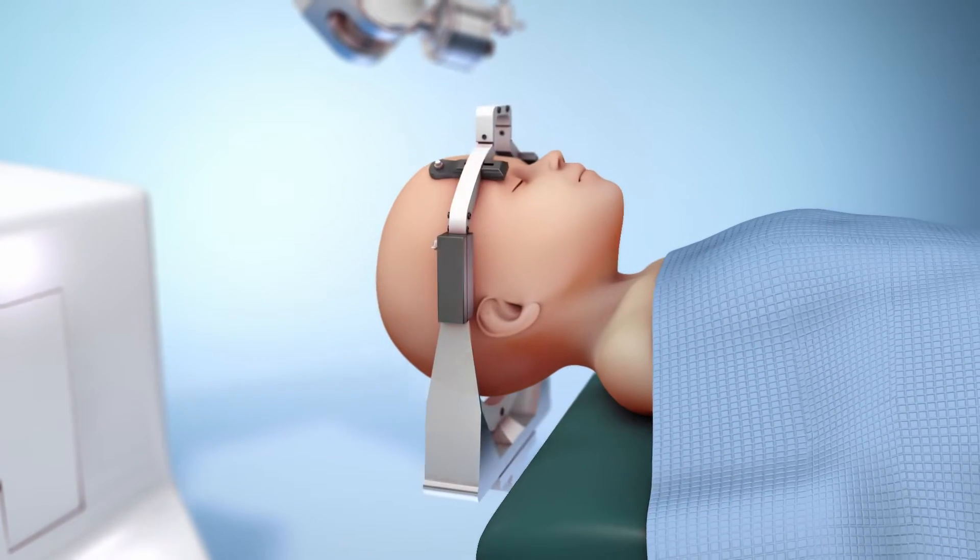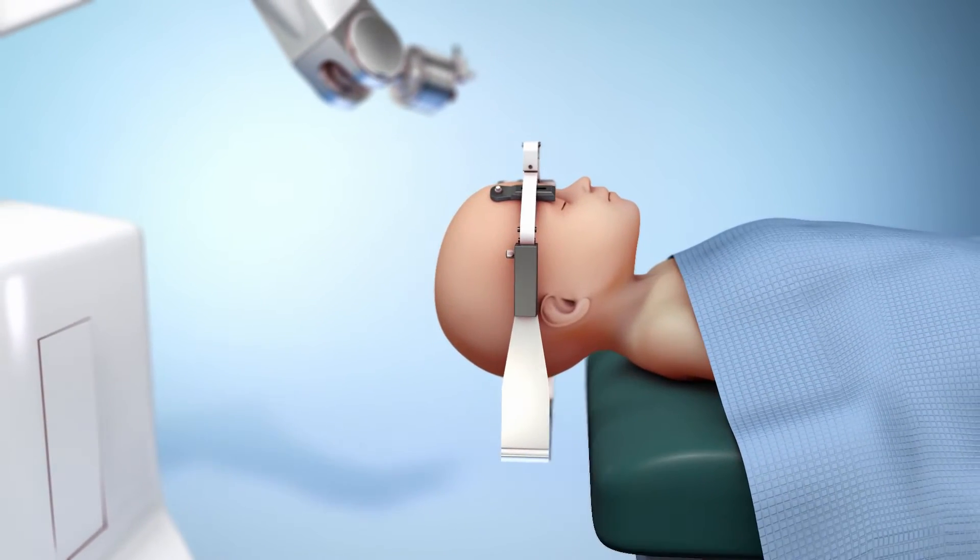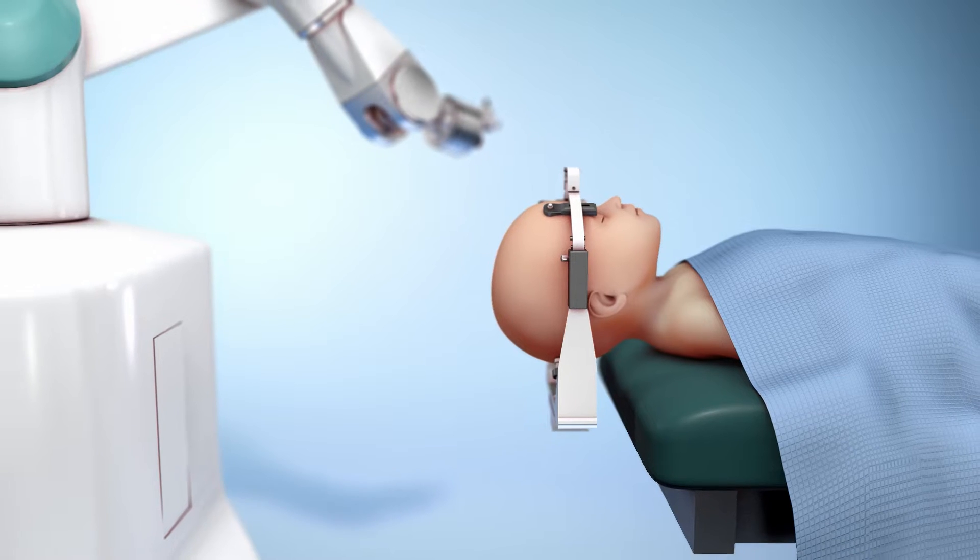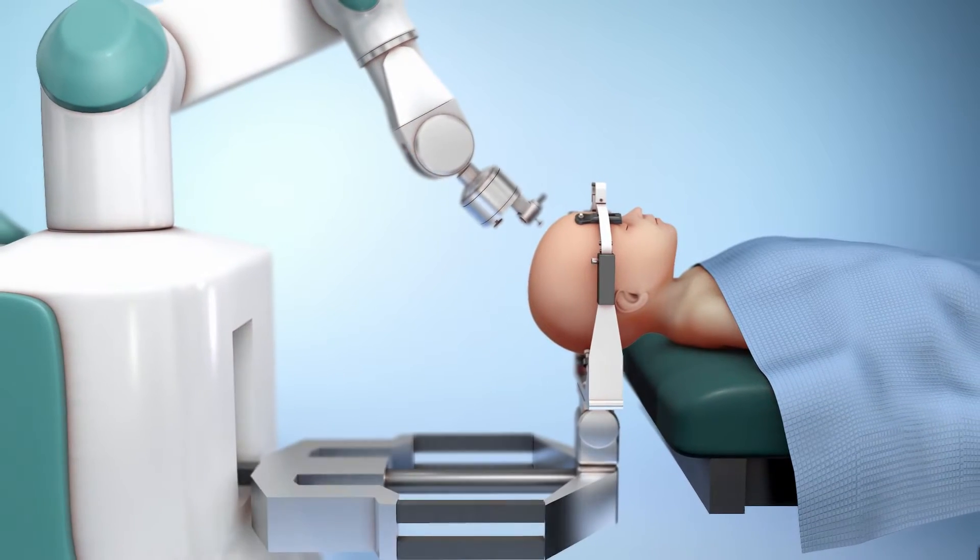A robot will be used to insert electrodes into the brain to help find where the seizures are happening. To begin, the surgeon will secure the patient to make sure everything is aligned with the robot. Then, the patient is connected to the robot.